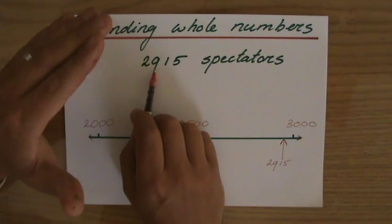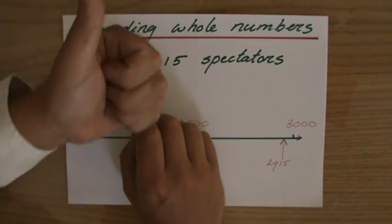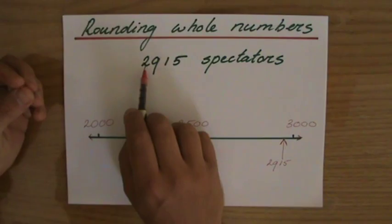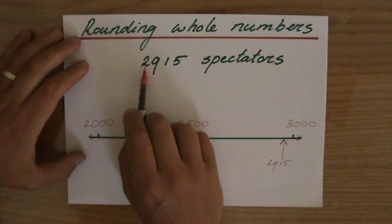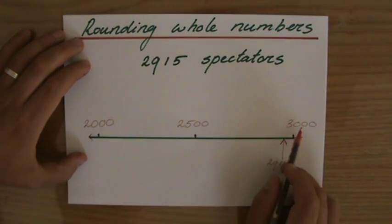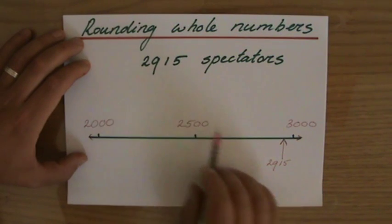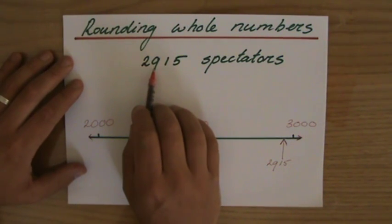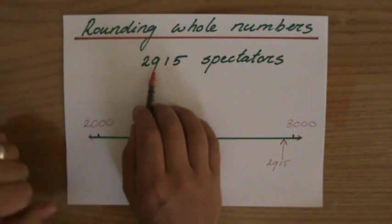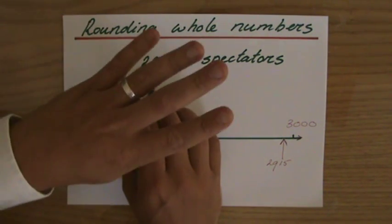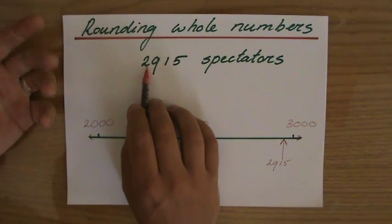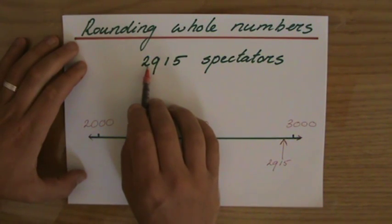If that is a 5 or higher, a 5, a 6, a 7, an 8, or a 9, then the 2 will go up to a 3. So indeed, in this case, it goes to 3,000, because it will be closer to 3,000 than it is to 2,000. If that next number, the hundreds in this case, would be lower than a 5, a 4, a 3, a 2, a 1, or a 0, then the 2 would stay 2, and then the answer would be 2,000.